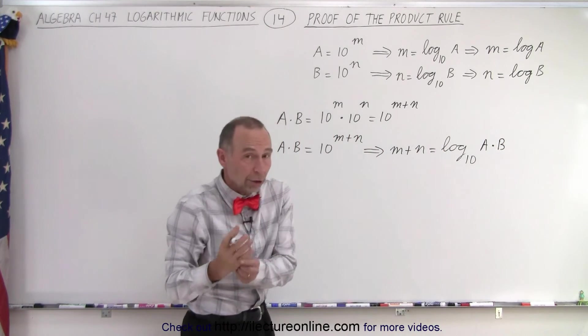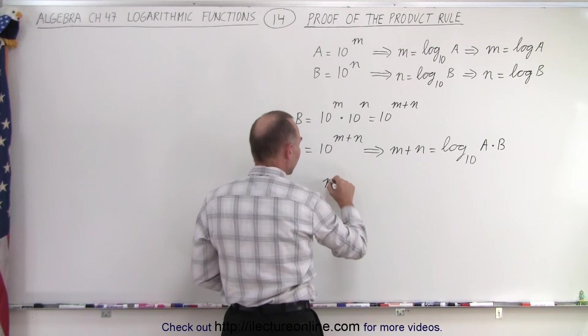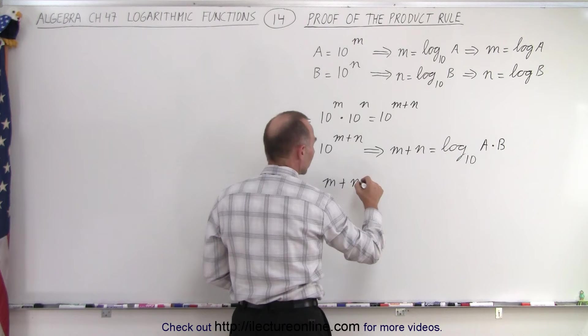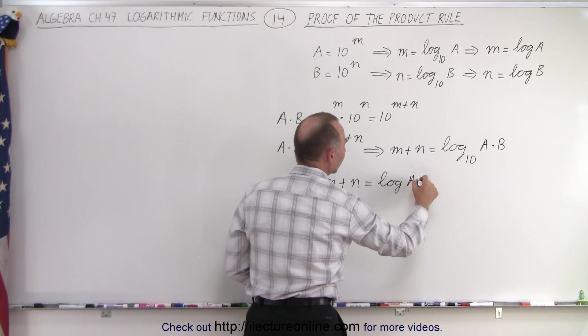And again, we don't have to write log to the base 10, we simply write log. So we can write that m plus n is equal to the log of A times B.